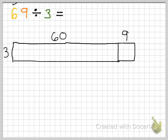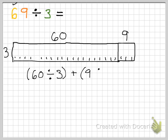How many groups of 3 are in 60? There are 20 groups of 3 in 60. And counting all the way through, there are 23 groups of 3 in 69. Another way to think of it: we did 60 divided by 3, and then we add on 9 divided by 3. 60 divided by 3 — basic fact, 6 divided by 3 is 2, with one zero, so that's 20. Plus 9 divided by 3, which is 3. Your final answer is 23.